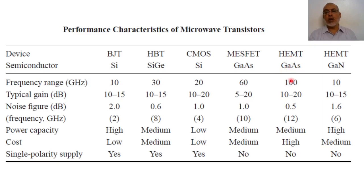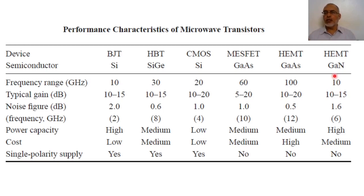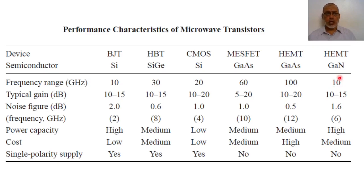Gallium arsenide HEMT can be used up to 100 GHz. Note that this number from the textbook of Microwave Engineering by Pozar, circa 2005 edition, may be outdated — nowadays in 2020, gallium nitride HEMT can be used for more than 100 GHz, and the number for gallium arsenide HEMT is also close to 100 GHz. The main advantage of gallium nitride is that it can be used for both high power and high frequency.